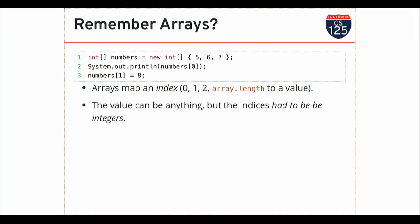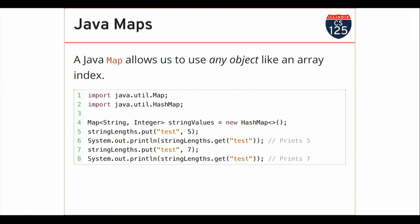On some level, you can think of an array as mapping an index between 0 and array.length to a value. We've seen and used arrays of all sorts of different types of Java objects, so the value could be anything, but the indices had to be integers and they had to be consecutive. In certain places, that turns out to be kind of a pain — it gets in the way of solving the problem. Today we can finally lift that limitation.